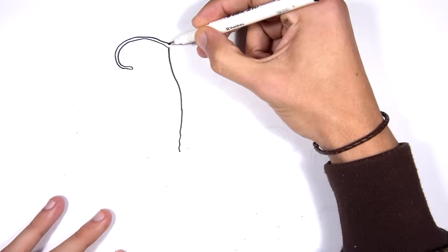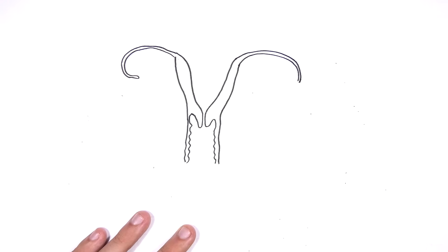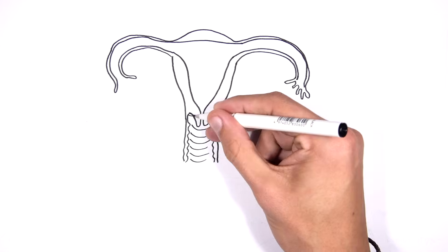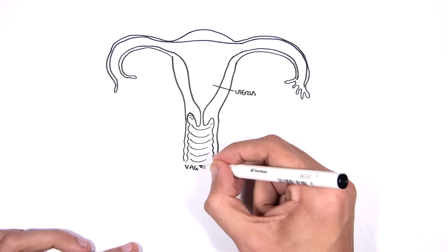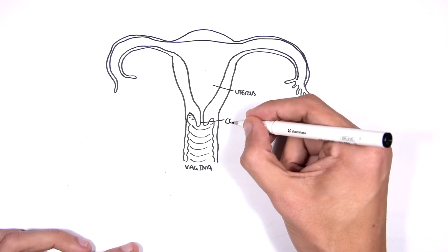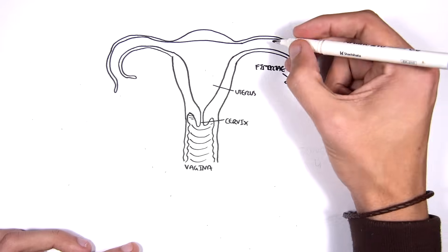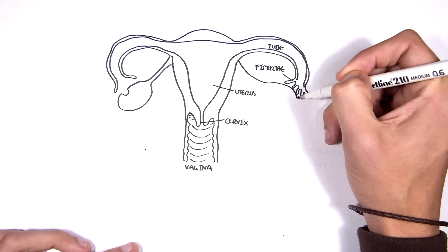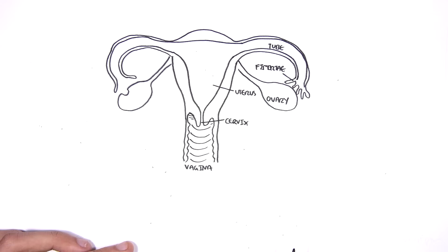This video is the first part of a series that will look at embryology. We're going to begin where fertilization and implantation occur. Here we have the reproductive tract: the uterus, the vagina, the cervix, fimbriae, and the uterine tube, also known as the fallopian tube. Attached to a ligament on the sides are the ovaries, which are the female gonads and produce the female egg, the oocyte.